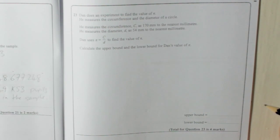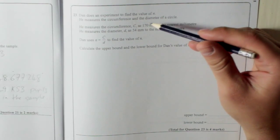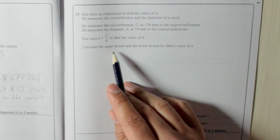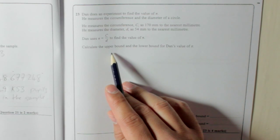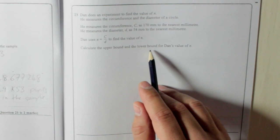So what's that mean? It means because these have been rounded, there is the upper bound, which is the biggest possible value he gets for pi, or the lowest possible value for pi.